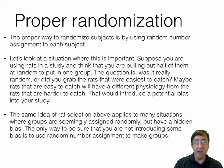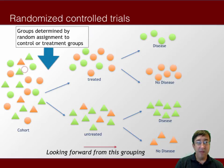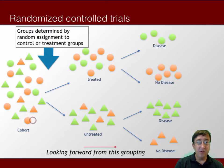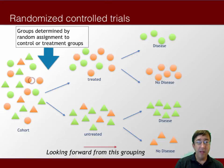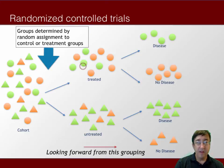The only way to be sure that you are not introducing some bias is to use random number assignment to make groups. This graph shows a depiction of how a randomized controlled trial is organized. You have a group of individuals that you will divide into treatment groups and untreated, and the assignment occurs randomly. The two important things are: membership in the treated and untreated group is randomly selected from the original cohort of subjects, and the investigator controls the treatments.